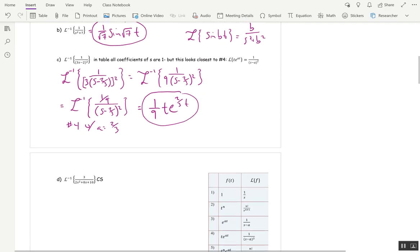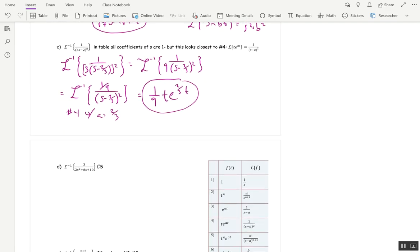Let's look at another one where you need to pull out a constant first. This one, cs stands for complete the square. This one has a 2 in front of the s squared, so let's get rid of that right off the bat. This is L inverse of 3 over twice s squared plus 4s plus 5. Now take that 2, bring it upstairs, so 3 halves is our constant. This is L inverse of 3 halves over s squared plus 4s plus 5.